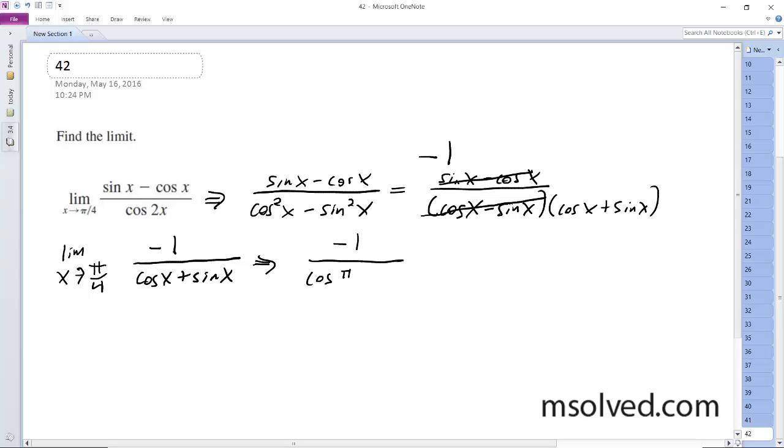So cosine of pi over 4 plus sine of pi over 4. Pi over 4 is the same thing as root 2 over 2.